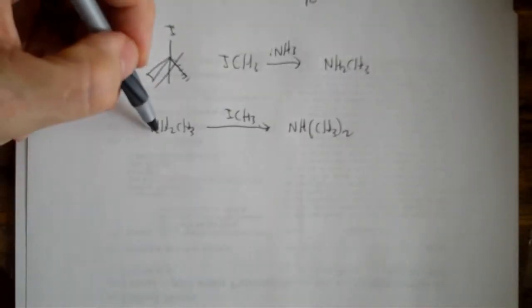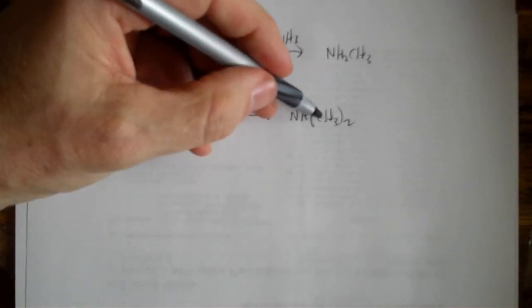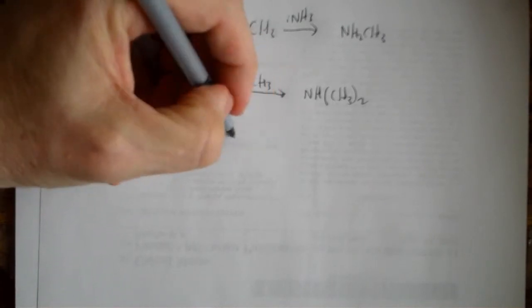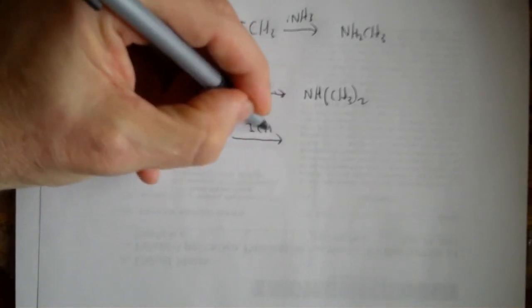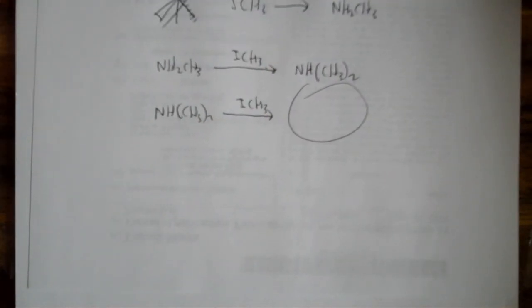If you take methyl amine and treat it with methyl iodide, you get dimethylamine. Can you get where I'm going with this? What if you do this? What are you going to get? Please pause the video and predict that.